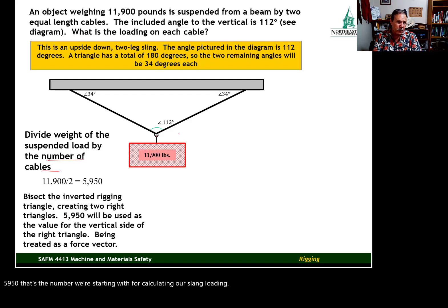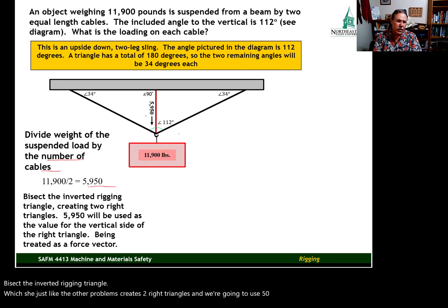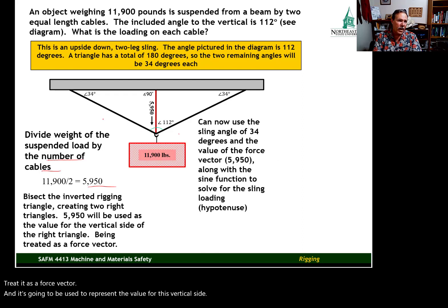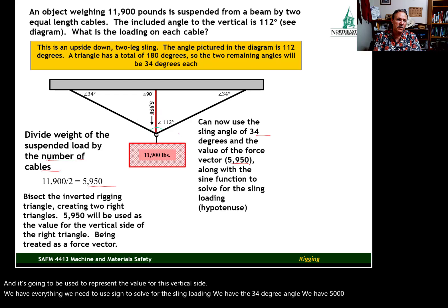Bisect the inverted rigging triangle, which just like the other problems creates two right triangles. And we're going to use 5,950, treat it as a force vector. And it's going to be used to represent the value for this vertical side. We have everything we need to use sine to solve for the sling loading. We have the 34 degree angle. We have 5,950 as the value for this side.